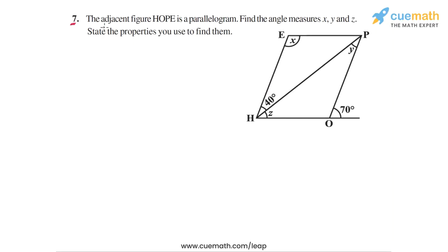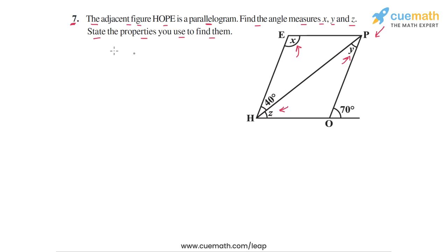In question 7, the problem statement says the adjacent figure H-O-P-E is a parallelogram. Find the angle measures X, Y, and Z and state the properties you use to find them. X is the angle at E, Y is angle H-P-O, and Z is angle P-H-O. We have to find the measures of all three angles.